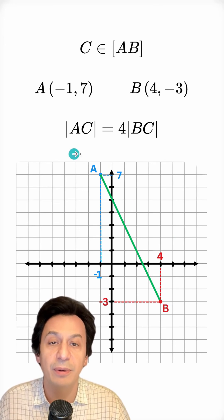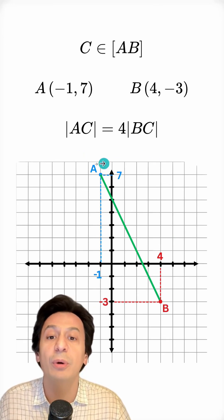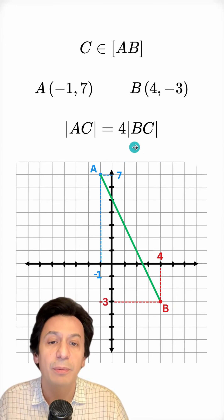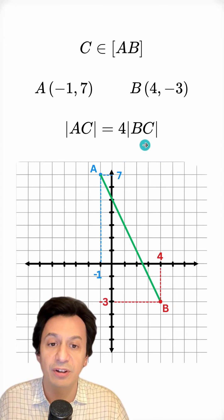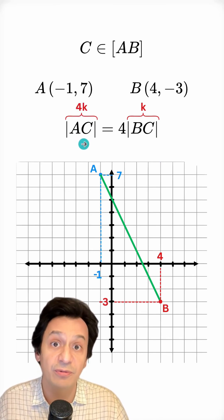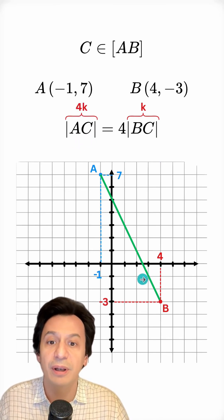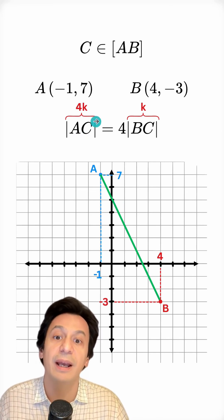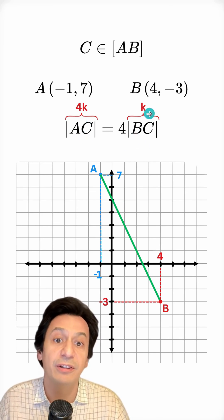Now I need to divide this line segment AB in the given ratio. So let's take a closer look at our ratio. If I call the line segment BC here K, then since this part will be 4K, I can also call the line segment AC 4K. So point C will be at such a position that its distance from A will be 4K and its distance from B will be K.